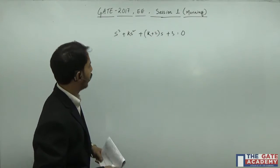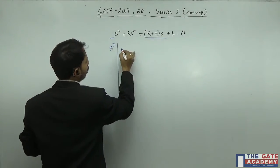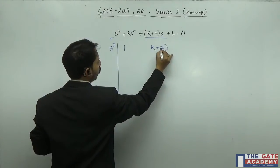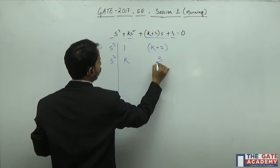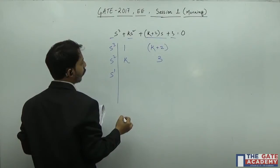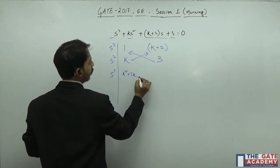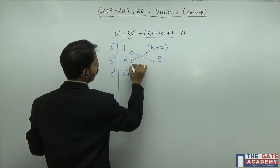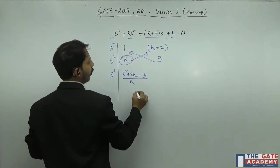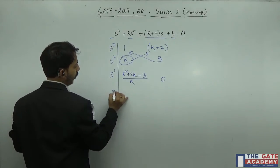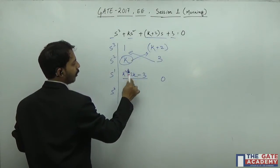We need to apply the Routh-Hurwitz (R-H) criteria. For the R-H table: for s³ we take the coefficients 1 and (k+2); for s² we take k and 3; for s¹ we compute k·(k+2) minus 1·3, divided by k, giving (k²+2k−3)/k; and for s⁰ the term is 3.